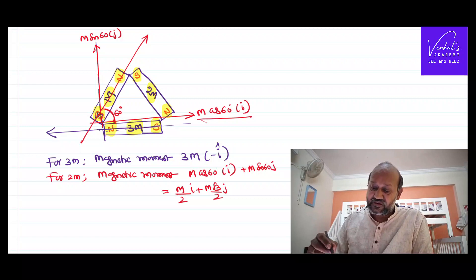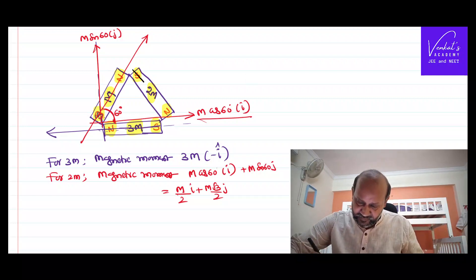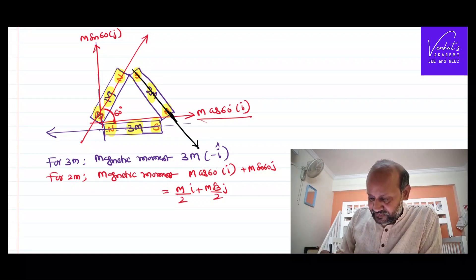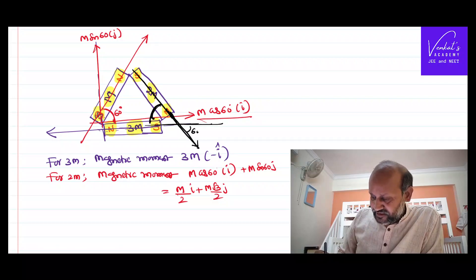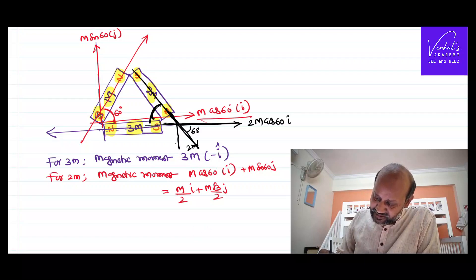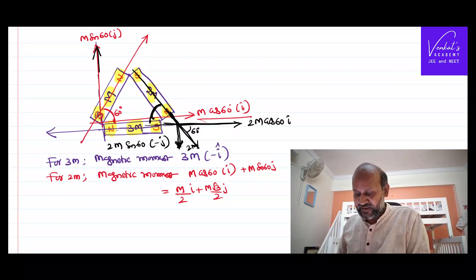Now let's talk about the third magnet — the 2m one. Its direction is also from south to north. With the base it makes an angle of 60 degrees. This is 60, this is also 60, and the total value is 2m. Resolving: 2m cos60 along positive x-axis is the adjacent component, and 2m sin60 is in the downward direction, so it is minus ĵ.